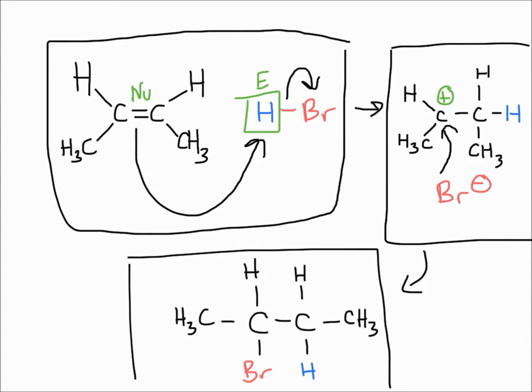This mechanism is a two-step mechanism in which the pi bond is first protonated. The pi bond is the nucleophile while the hydrogen is the electrophile. Then the halide, which is the result of the first step, attacks the carbocation.